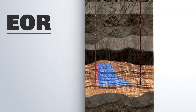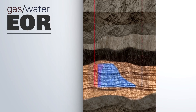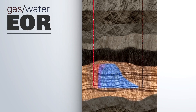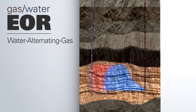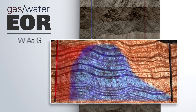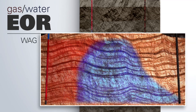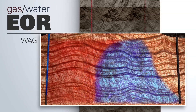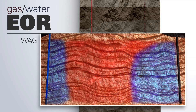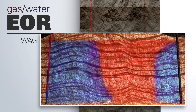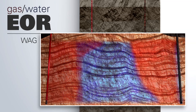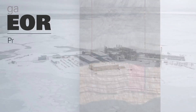Miscible gas, like normal gas, is still very mobile in the reservoir, so it is often injected alternately with water in a water-alternating gas, or WAG, process. The water slows the gas down and also sweeps the rock lower down in the reservoir that the gas might not reach.